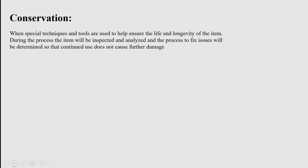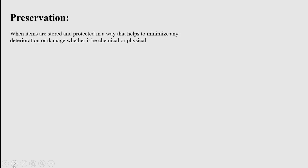What is conservation and preservation? Conservation is when special techniques and tools are used to help ensure the life and longevity of an item. The item will be inspected and analyzed, and the process to fix issues will be determined so that continued use does not cause further damage. Preservation is when items are stored and protected in a way that helps to minimize any deterioration or damage, whether chemical or physical. In other words, preservation is prevention of potential issues and conservation is dealing with those issues if they do occur.